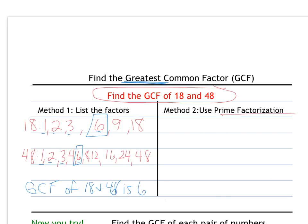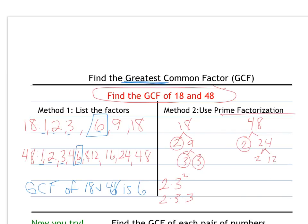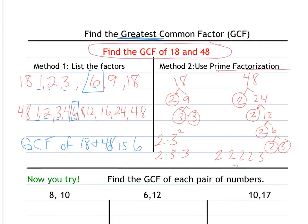Another method is to use prime factorization. I find the prime factors of 18, which are 2 times 3 squared, or 2 times 3 times 3. For 48, the prime factorization is 2 times 2 times 2 times 2 times 3, which is 2 to the 4th times 3. Looking at common factors: they share one 2 and one 3. Since they both have 2 times 3 in common, and 2 times 3 is 6, their greatest common factor is 6.